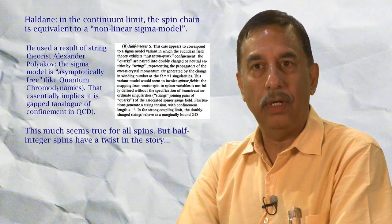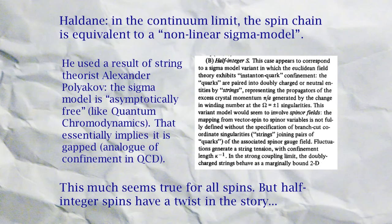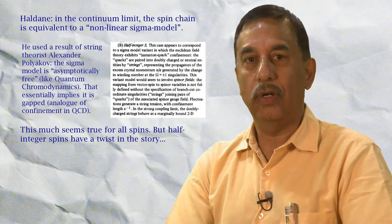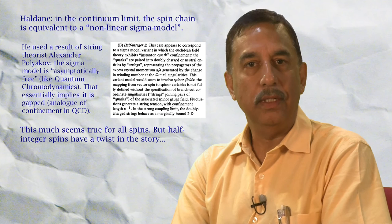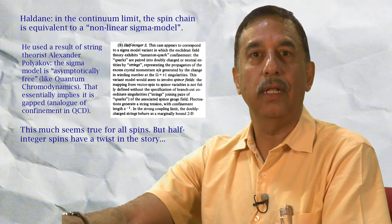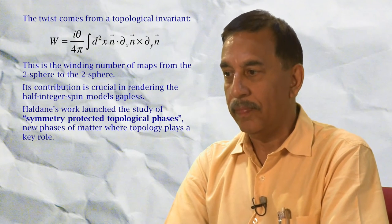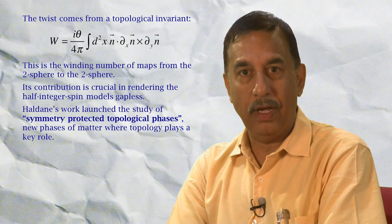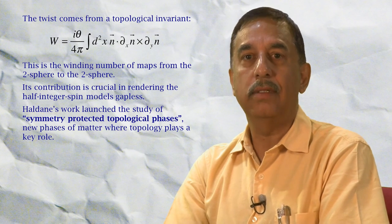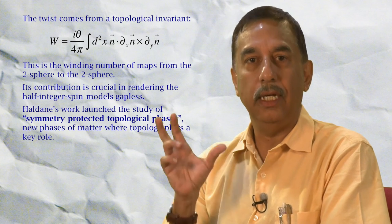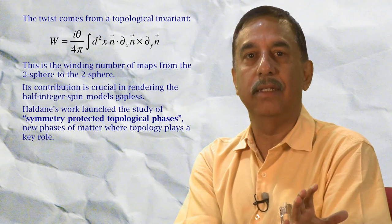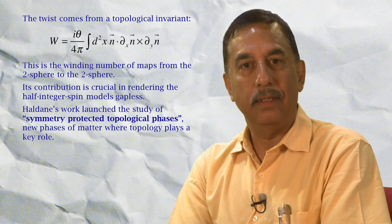What Haldane did actually was really striking. He mapped the spin chain to a non-linear sigma model, which is a continuum field theory, and used a result due to Sasha Polyakov, a string theorist, who had shown that this sigma model is asymptotically free like quantum chromodynamics. Essentially, asymptotic freedom means forces are weak at long distances and strong at short distances, and this is what leads to these spin chains being gapped. But if this were all the story, then all spin chains of this kind would be gapped regardless of their spin. However, Haldane showed that there is a topological invariant, a winding number, such that if its coefficient is quantized and if that quantized coefficient takes a certain value, then the topological term essentially cancels the gap due to the rest of the Hamiltonian and the system becomes gapless.